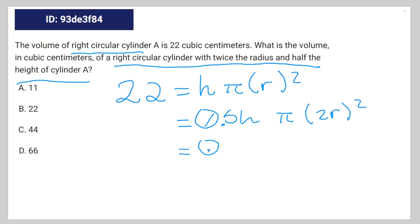You can write it like this, and you can further rewrite it like this. We know what H pi R squared is. It's 22.